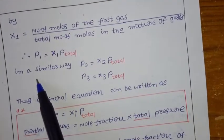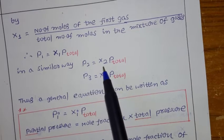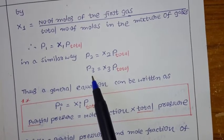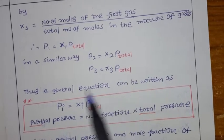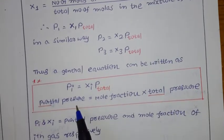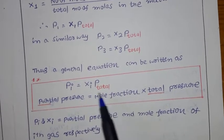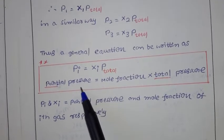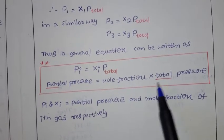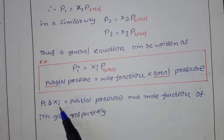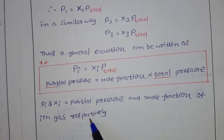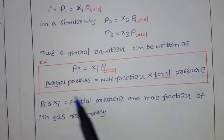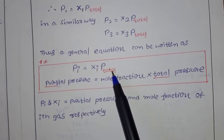So P1/P_total = X1, which means partial pressure P1 = X1 × P_total. Similarly, P2 = X2 × P_total, and P3 = X3 × P_total. The general equation is Pi = Xi × P_total, where Pi is the partial pressure and Xi is the mole fraction of the ith gas. You should be very careful: Pi is the partial pressure and P_total is the total pressure.